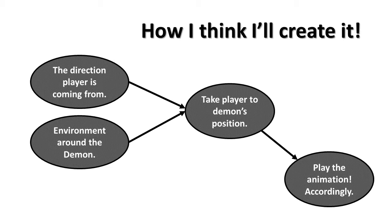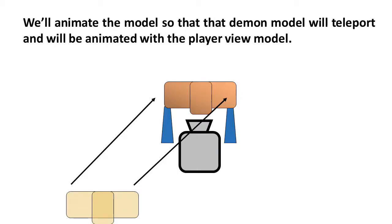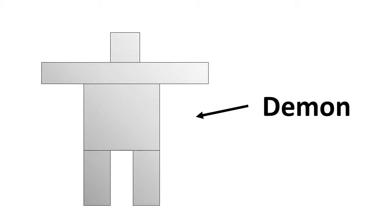When the player triggers a glory kill, they will be taken to the demon's position and the animation will be played. We should also take into account the direction the player is coming from and the objects around the demon to make the kills feel contextual. I'm thinking of using raycasts for that, but we'll have to see.